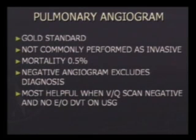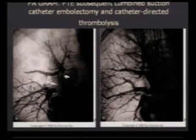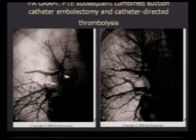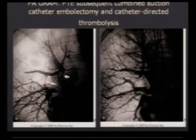A negative angiogram virtually excludes the diagnosis. It is most helpful when the ventilation-perfusion scan is negative and there is no evidence of DVT on ultrasonogram. The pulmonary angiogram image on the left shows two arrows indicating filling defects — these are clots sitting in the pulmonary artery. This patient was subsequently subjected to catheter-directed thrombolysis, and you can see that both clots are gone. This must have been life-saving given the major obstruction present.